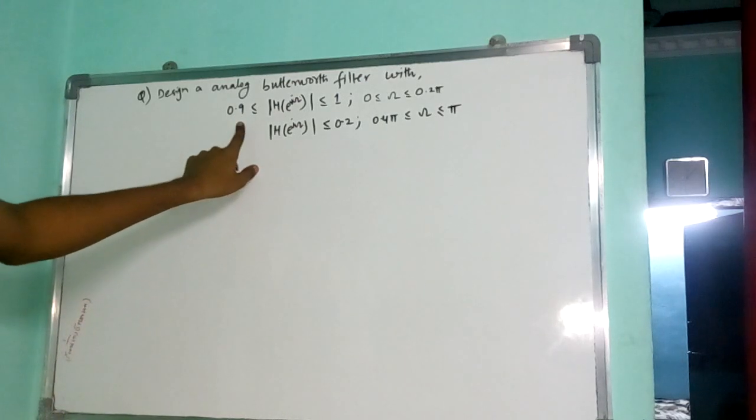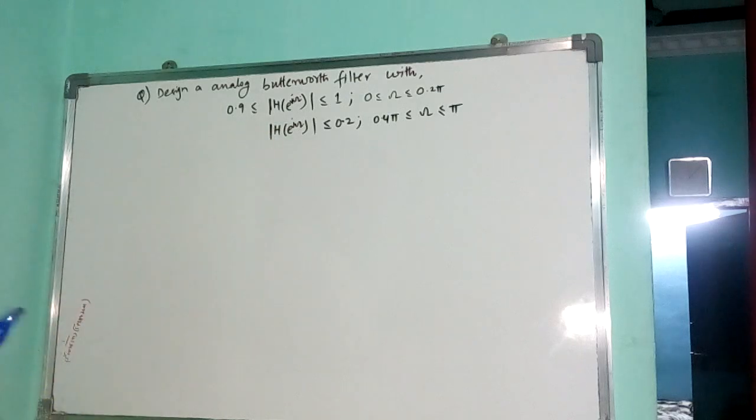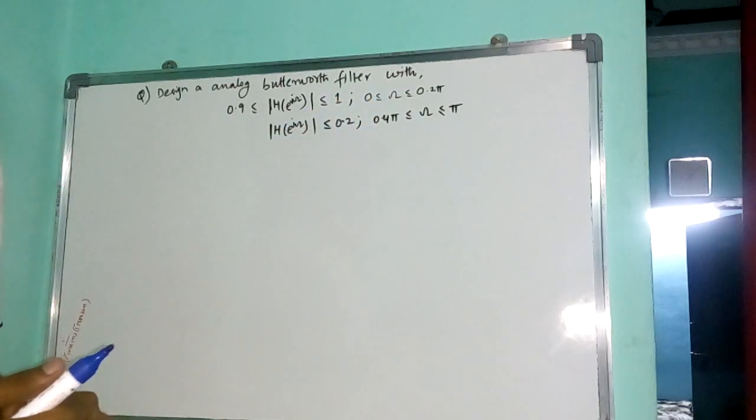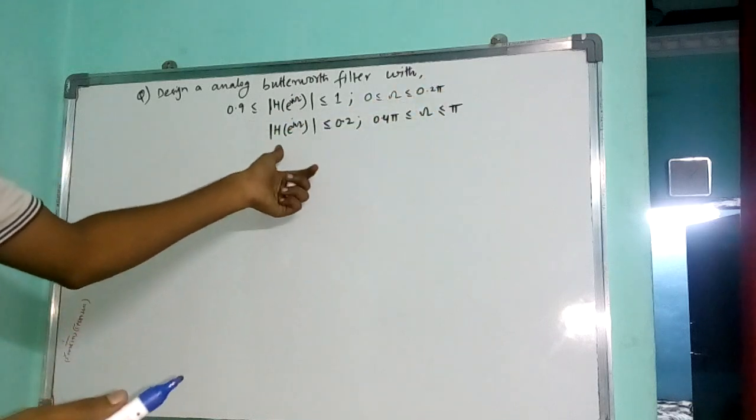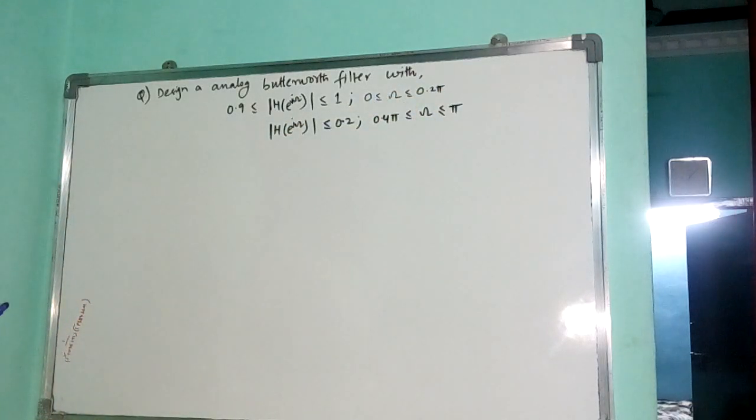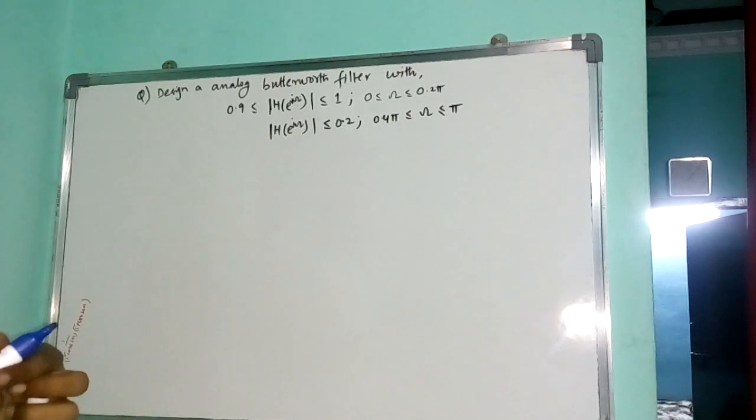It says that 0.9 less than or equal to mod h of e power j omega less than 1 for 0 to omega less than 0.25, and mod h of e power j omega less than 0.24, 0.45 less than or equal to omega less than or equal to pi.